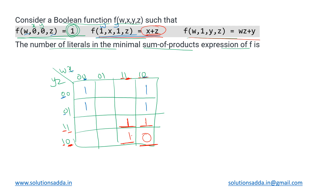The third expression says f(w, 1, y, z) = wz+y, meaning only x is fixed as one while w, y, and z are free. All eight cells corresponding to x=1 satisfy this. For each cell the value is replaced by wz+y. For the cell where w=0, z=0, y=0: 0+0=0. For w=1, z=0, y=0: wz=0, plus y=0 gives zero. For w=0, z=1, y=0: wz=0, plus y=0 gives zero.